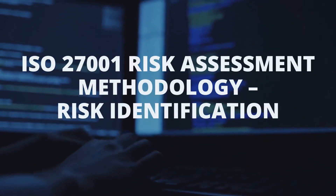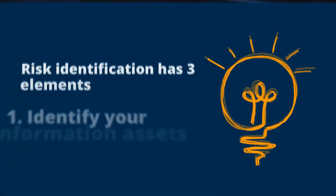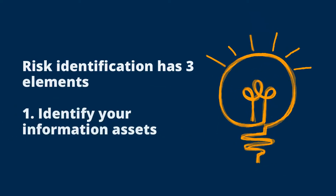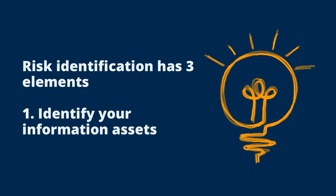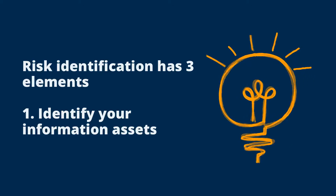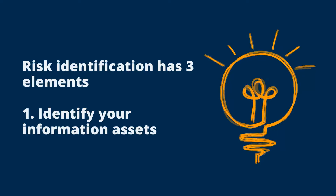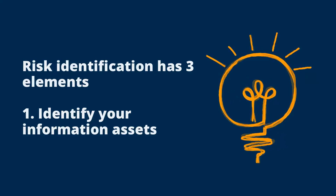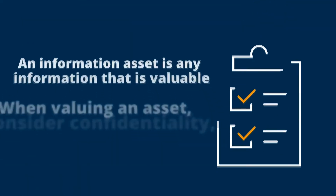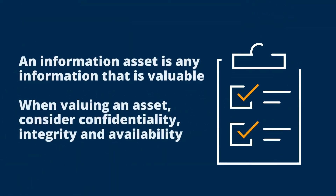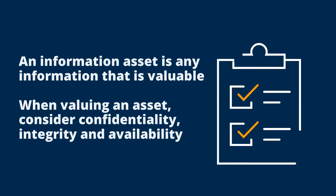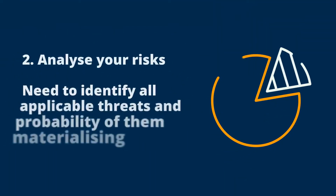Once you have determined the context, you can go ahead and conduct a risk assessment. The first part is to identify the risks that you face. This can be broken down into three elements. The first element is to identify your information assets — an information asset is any information that has value to you. It is important that you not only consider the confidentiality needs of the information but also the integrity and availability requirements.